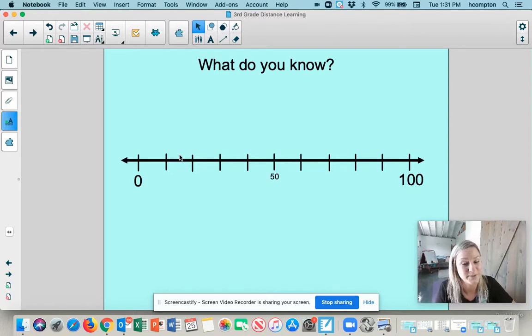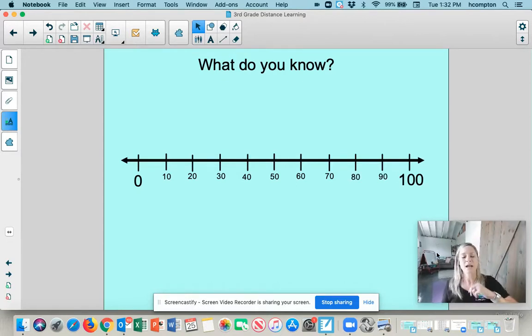All right, so maybe you figured out by now what the value of each tick is. Let's count them out. Here we go. Zero, 10, 20, 30, 40, 50, 60, 70, 80, 90, 100. All right, now check this out, you guys. I bet some of you could already place numbers on this number line. And you don't even know everything about this number line. Or maybe you do.